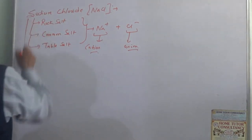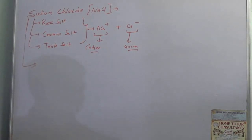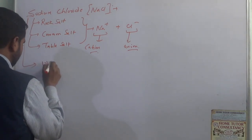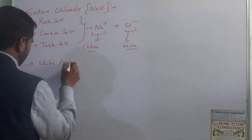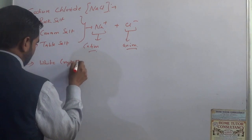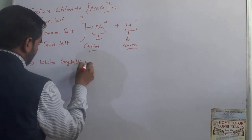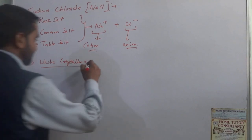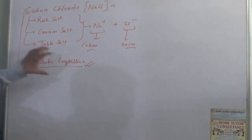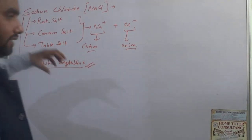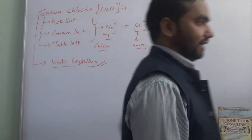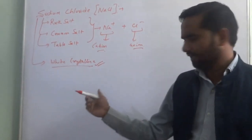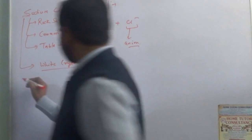The color of sodium chloride, as we know, is white and crystalline in nature when it is in pure form. It is mostly found in solid state, and the major source from which we get sodium chloride is seawater.